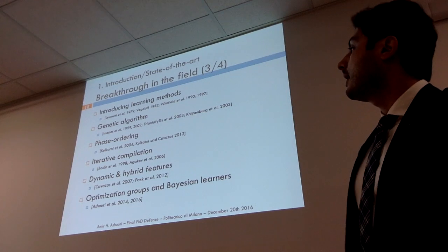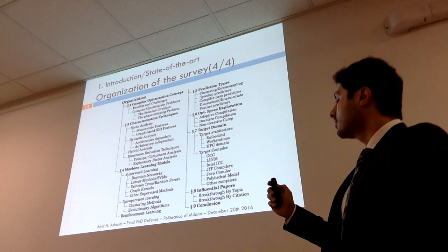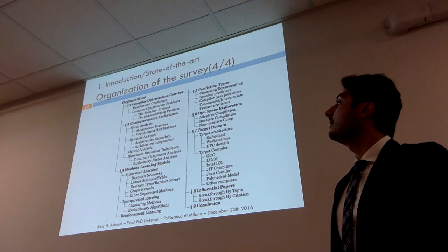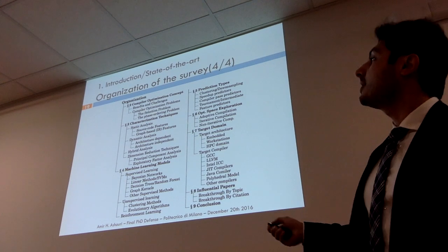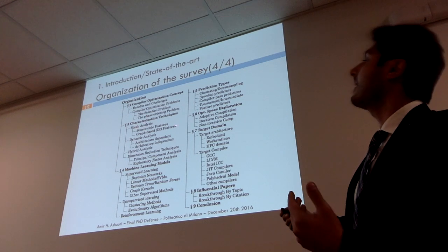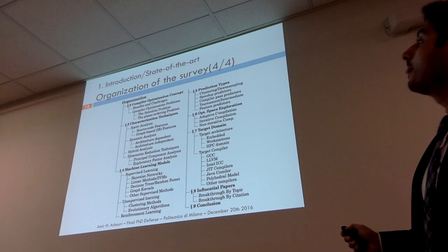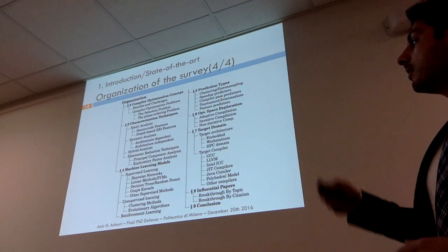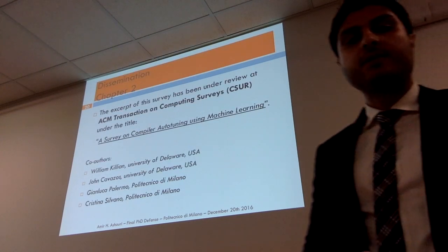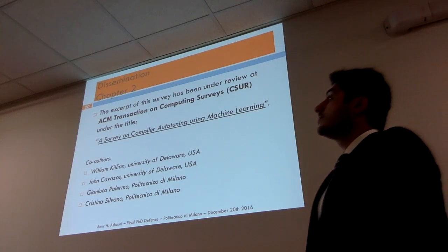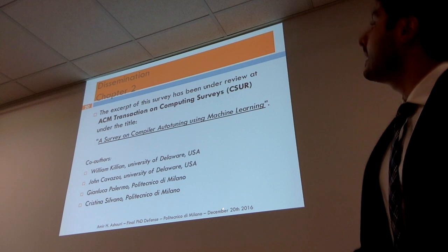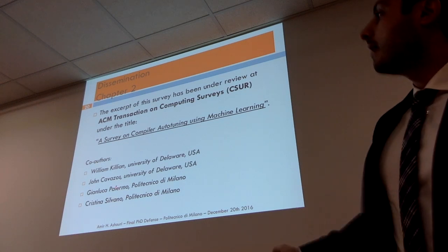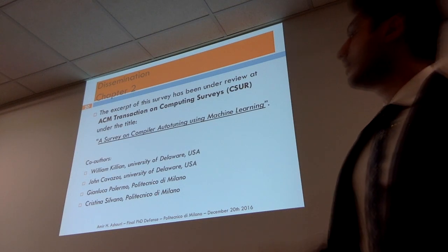In Chapter 2 of my dissertation, I classified and provided a holistic survey of the field, organized by characteristic technique, machine learning method, prediction type, optimization space, and target domain. We submitted this survey to ACM Transactions on Computer Survey under the name 'Survey on Compiler Auto-tuning Using Machine Learning.' These were my co-authors — the first two are my colleagues, John was my advisor at the University of Delaware, and the other two are my advisors at Politecnico di Milano.